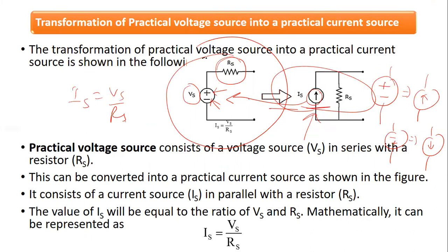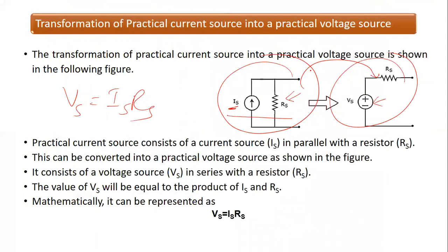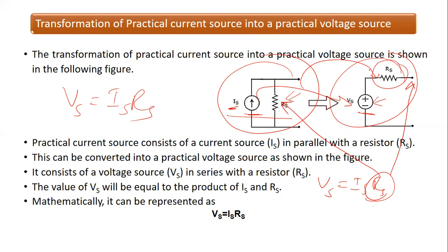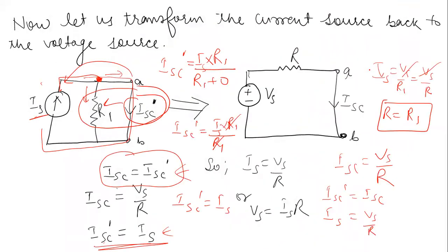This confirms that when you transform a voltage source into a current source, the current source value is IS equals VS / RS, and the same resistance RS is connected in parallel. Conversely, to transform a current source into a voltage source, draw a voltage source with value VS equals IS · RS, and connect the same resistance RS in series. This is how source transformation works, and we have mathematically proved that the series and parallel resistances are equal.